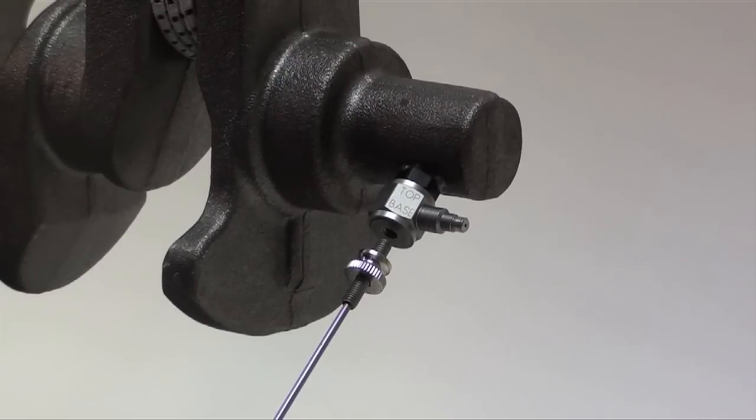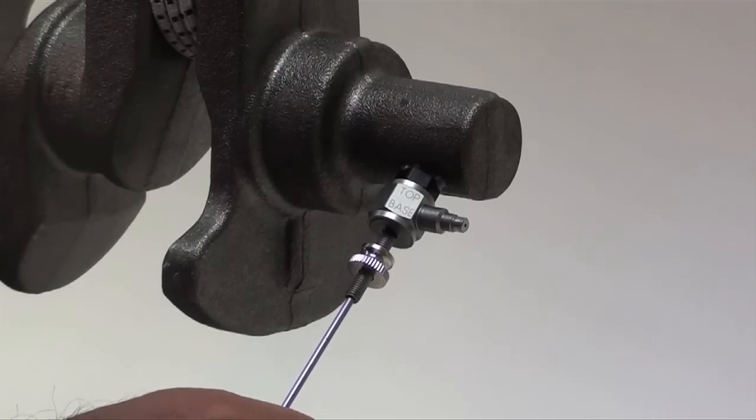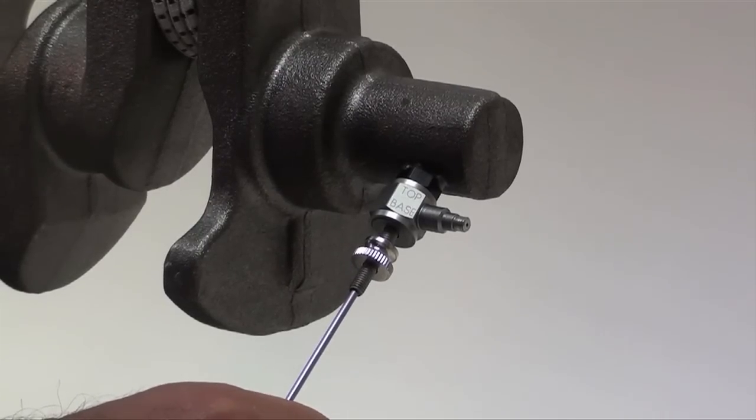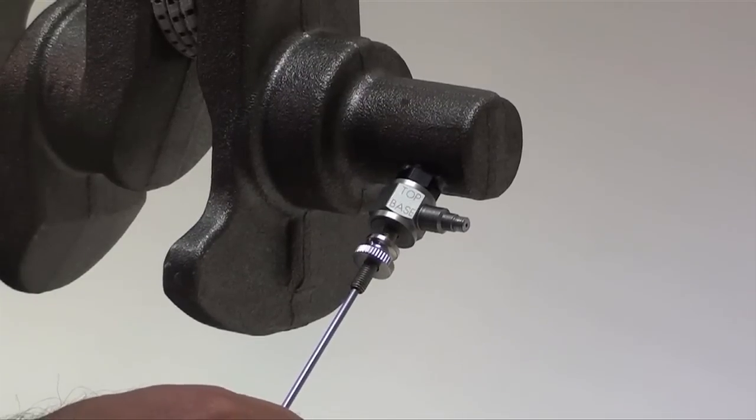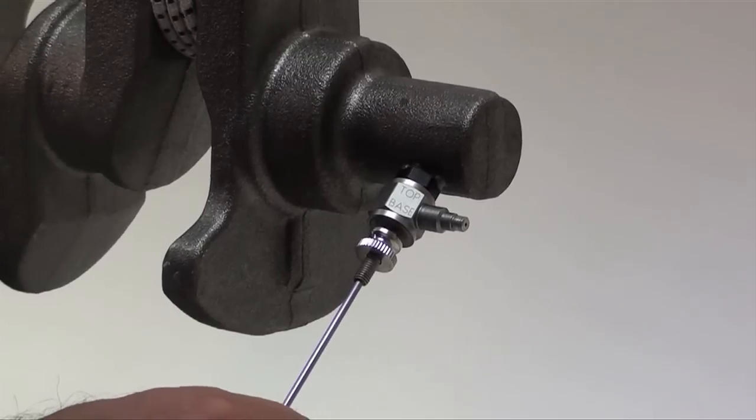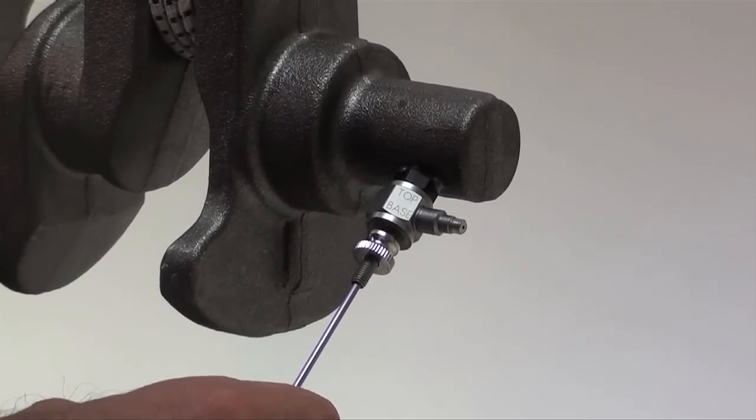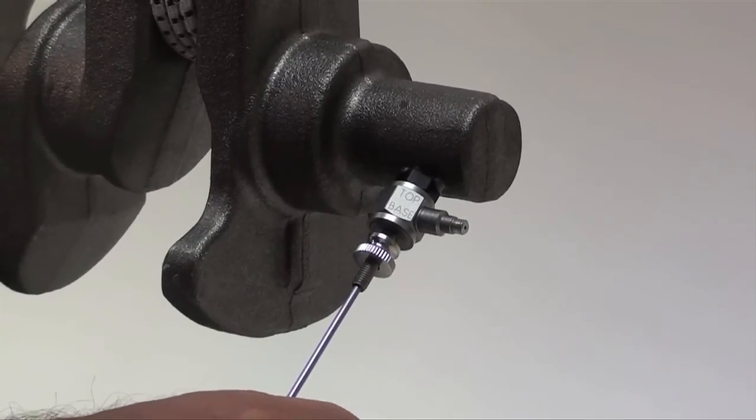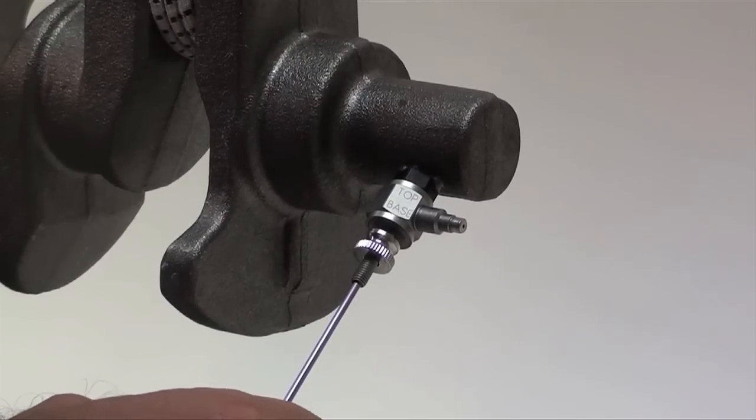Once you're satisfied with the alignment of the stinger to the load cell, a last alignment check is actually threading the stinger into the base of the load cell. And if alignment is adequate, the stinger should thread into the load cell very easily. If it does not, that means there's some side load or something that's not quite right. But in this case, the stinger threads very easily into the load cell, which means we have good alignment.